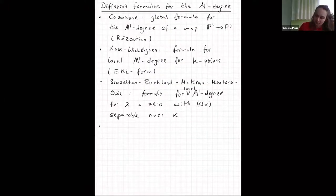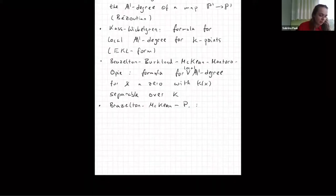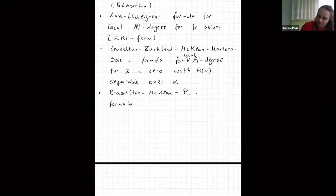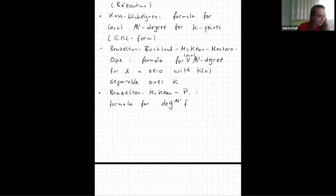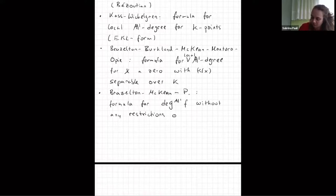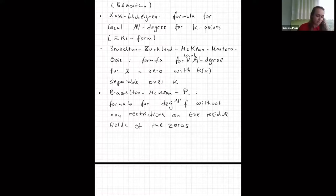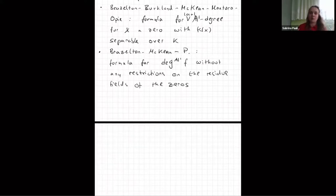What I want to talk about today is work with Thomas and Stephen: a formula for the A1 degree of f, where f still only has isolated zeros, but this works without any restrictions on the residue fields of the zeros. This also gives a formula for the local A1 degree without any restrictions, and for the sum of all of those.